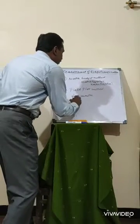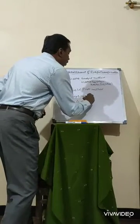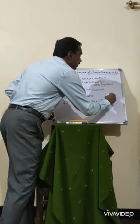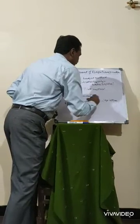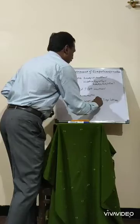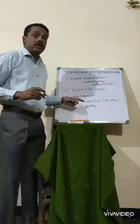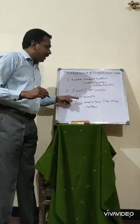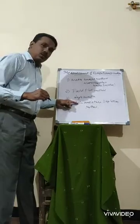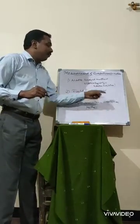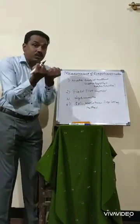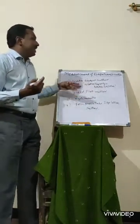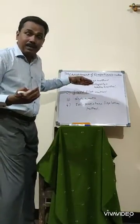The fourth method is the soil moisture depletion method. This depends on the soil — there are varieties of soil, and in each variety, the absorption of moisture and how water is observed at the soil level is measured.